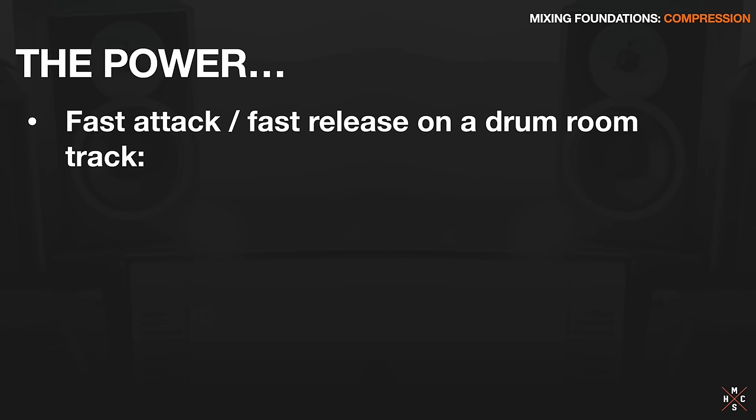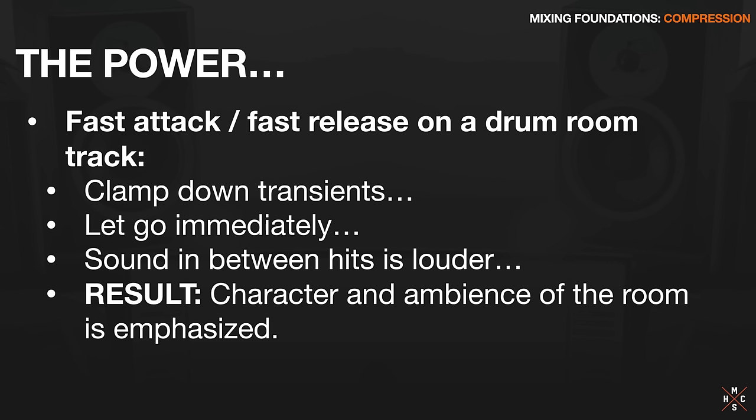We already talked about emphasizing transients, especially common in drums with a slow attack time letting that transient through before it compresses. But what if you do the opposite? What if you had a fast attack and a fast release on the drum room track? It's going to clamp down on those transients with the fast attack, then let go immediately. That means the sound in between the hits gets louder, and the result is that the character and ambience of the room is now emphasized - transients reduced, ambience increased. That's why heavy compression on drum room tracks is very common. With a compressor, we can actually increase the amount of ambience and natural reverb we hear in a track - it can actually make a room sound bigger.